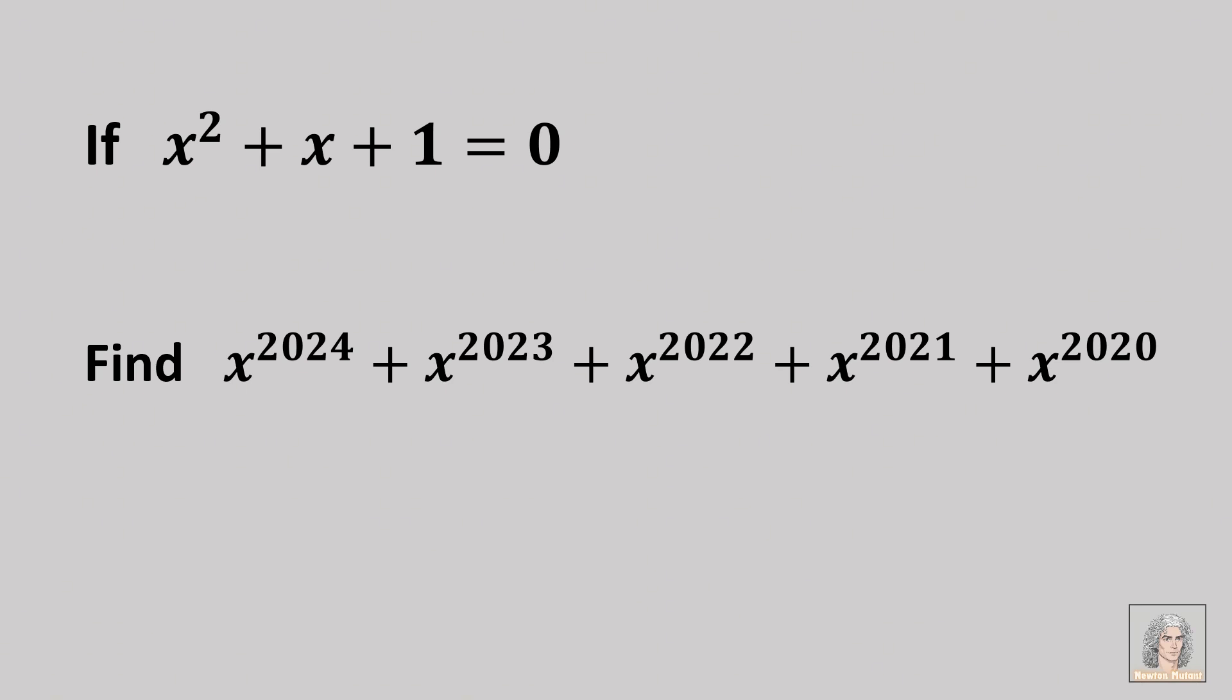If x squared plus x plus 1 equals 0, then find the value of this expression which is an addition of 5 large powers of x. Note that they are consecutive powers as well.